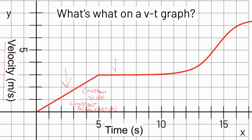This part of the velocity-time graph where we have no slope, or a zero slope, means that we have constant velocity. As opposed to a position-time graph where a flat line means no velocity at all, in a velocity-time graph a flat line or zero slope means constant velocity.